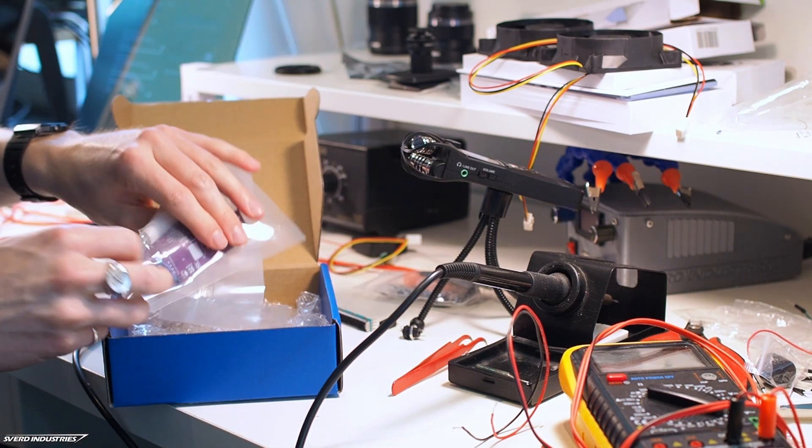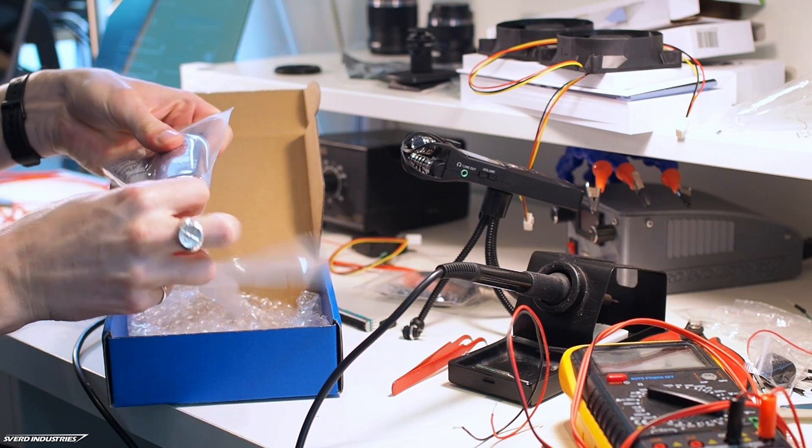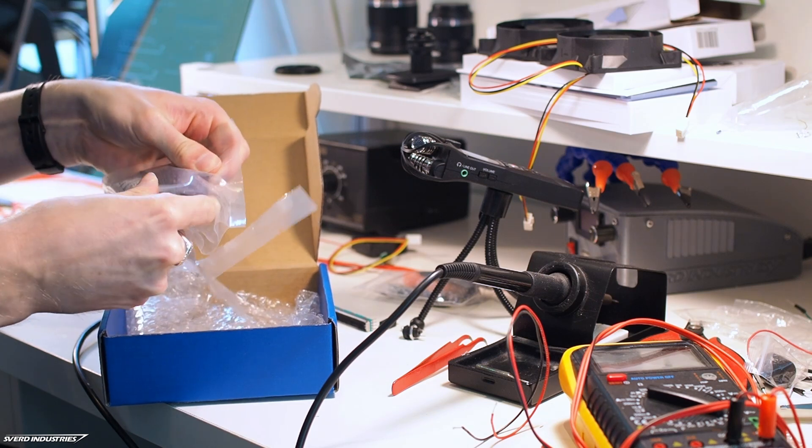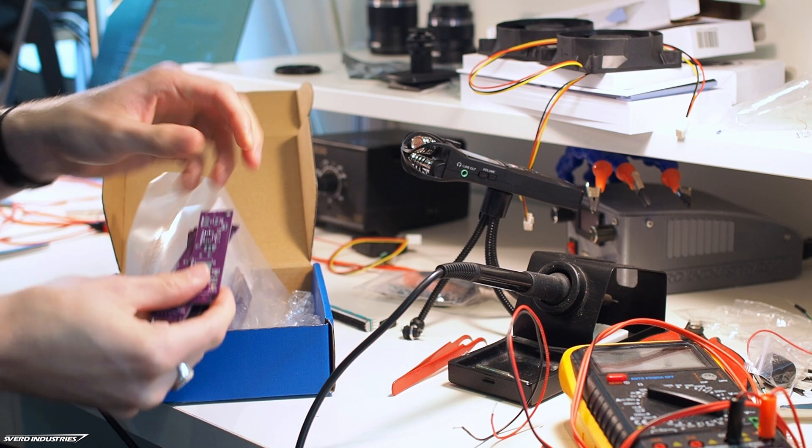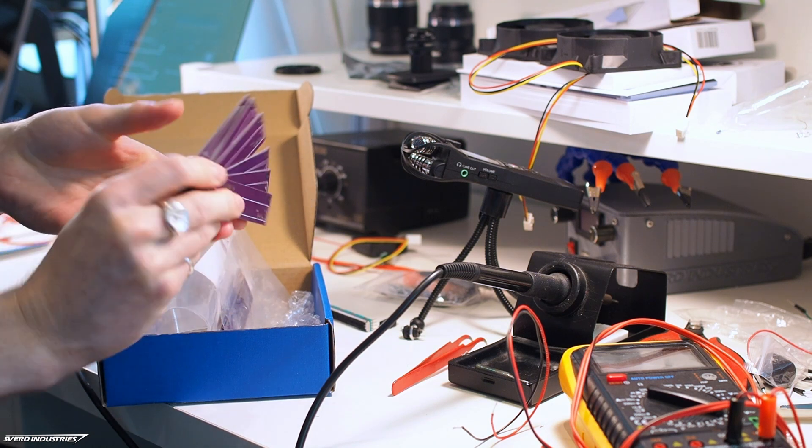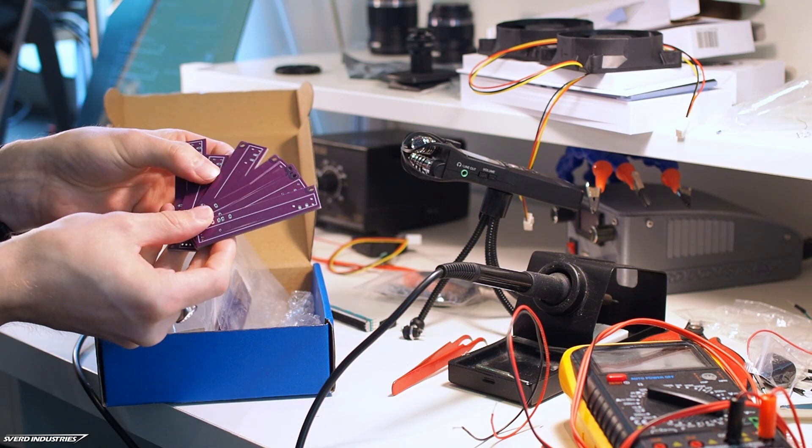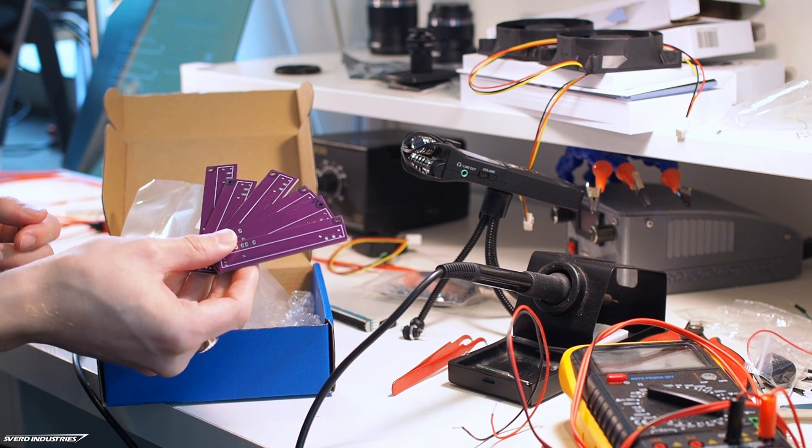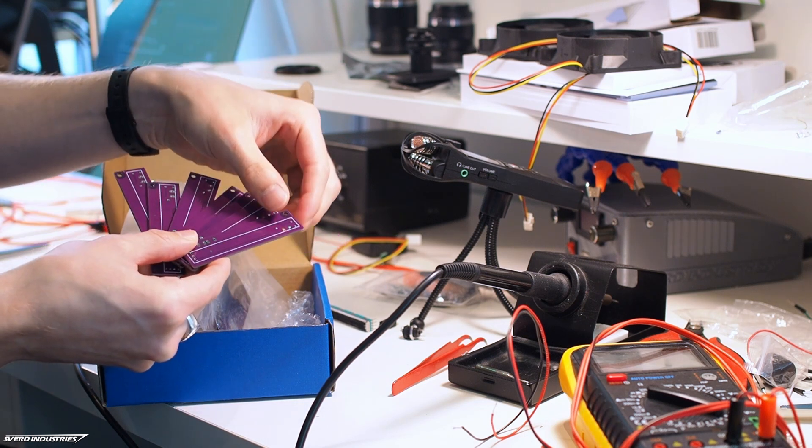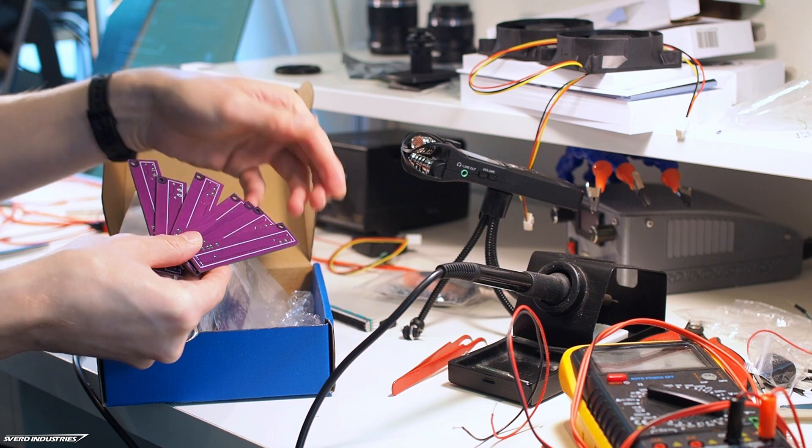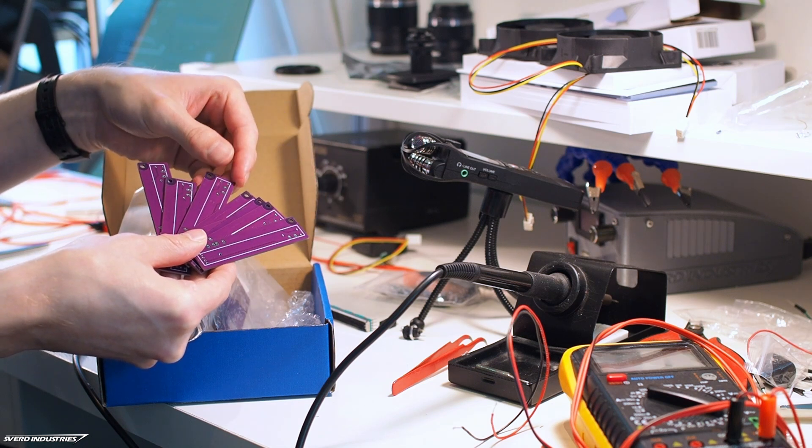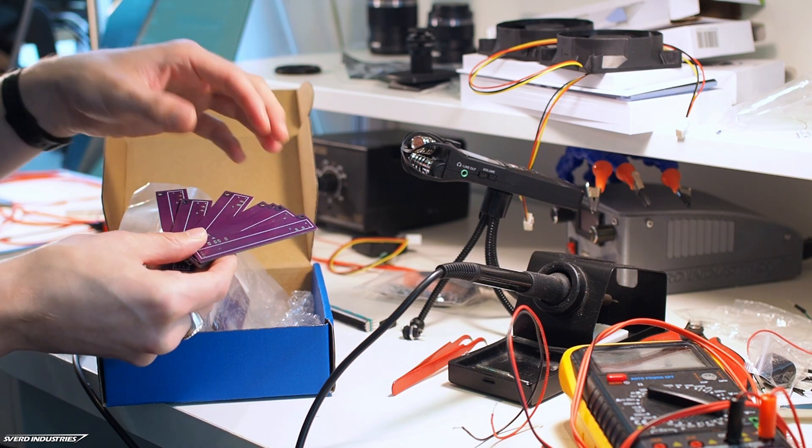So I have received the PCBs that I ordered in the mail, and the first thing that you might notice is the purple color of the PCBs. This was just because I wanted to try the new color that JLCPCB has added, and it doesn't really matter for the project because these will be hidden inside the 3D printed body anyways.